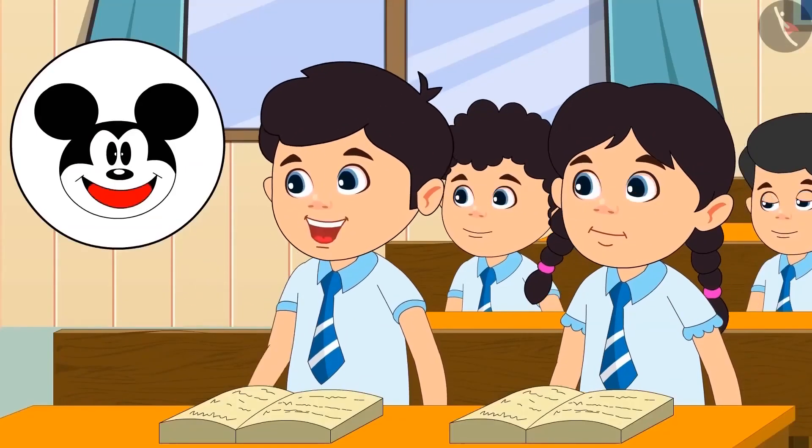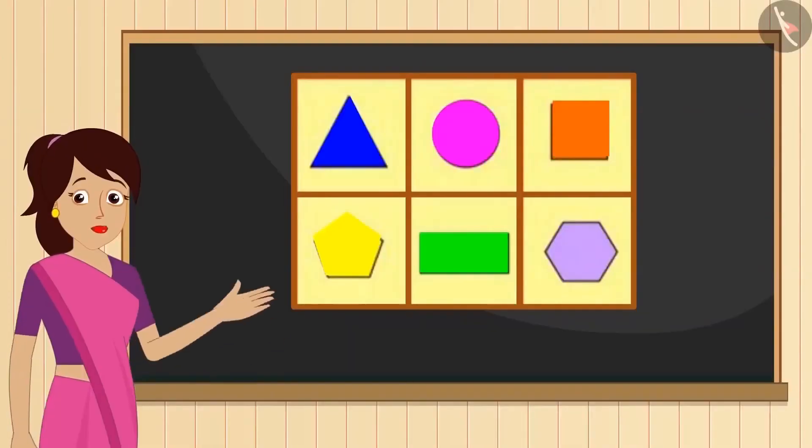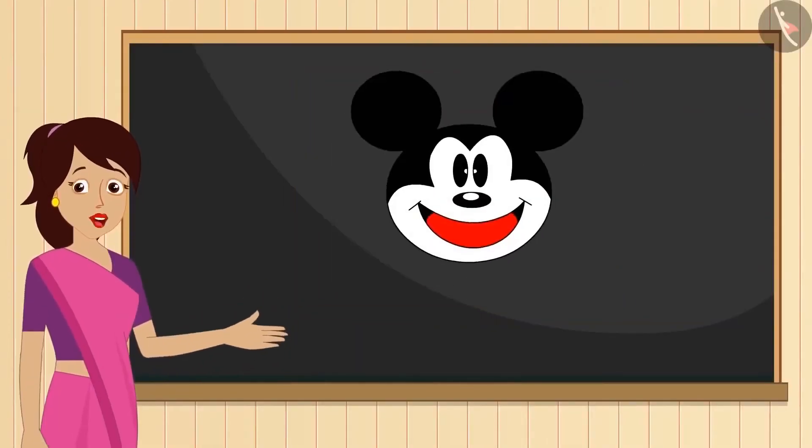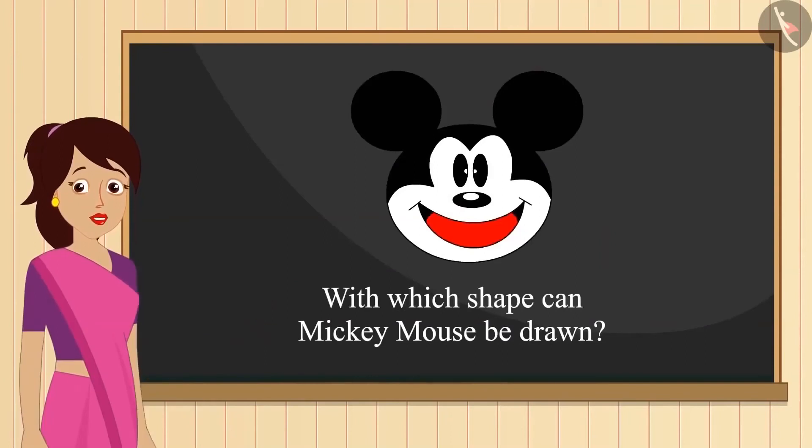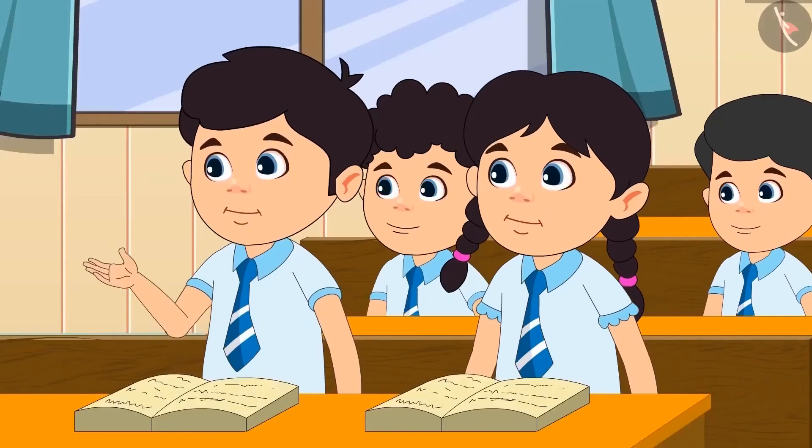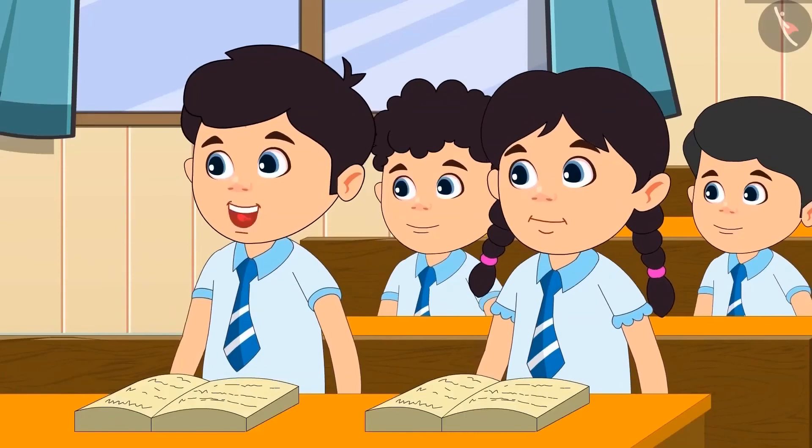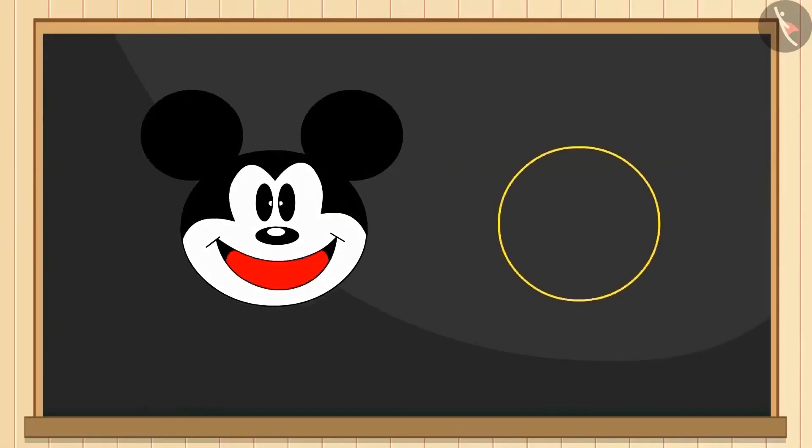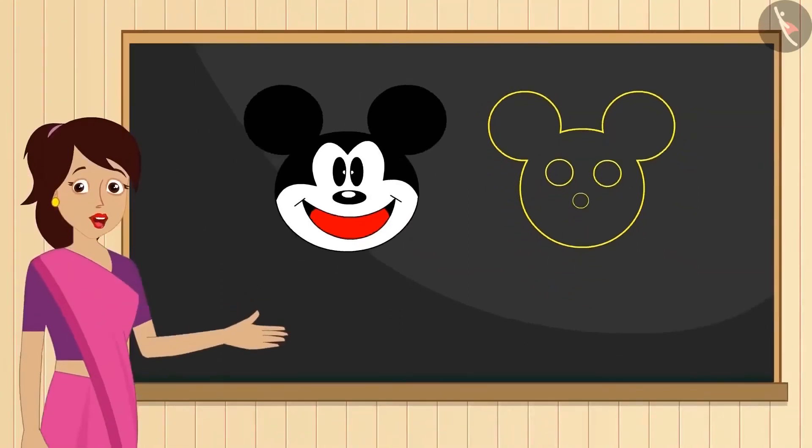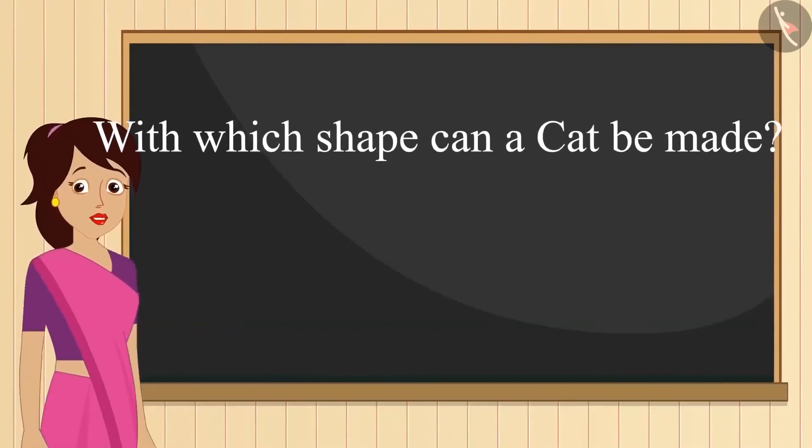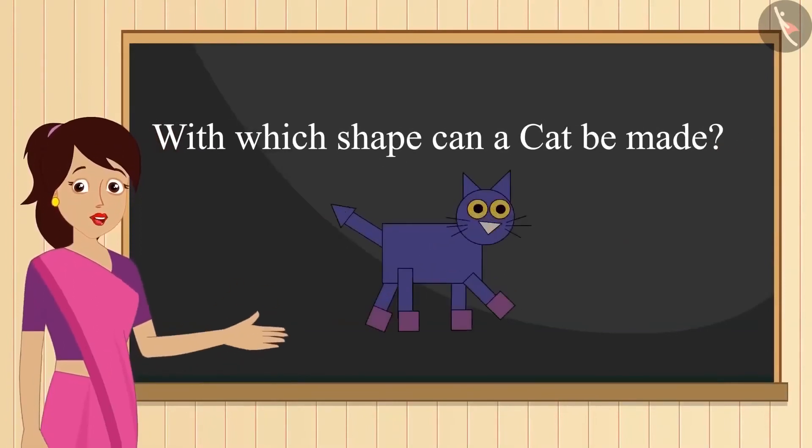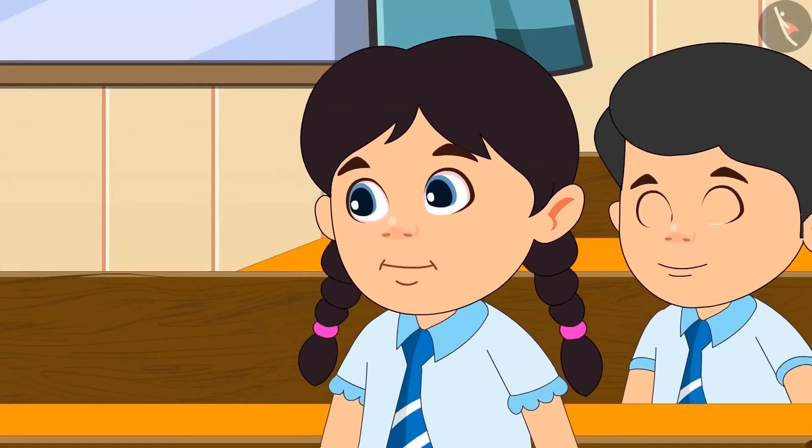So come on, let's go to the class. Children, tell me which is your favorite cartoon character? My favorite cartoon character is Mickey Mouse. So come on, now tell me with which shape you can draw the character Mickey Mouse? It can be drawn by joining six circles. Its big face can be made with one circle, two circles for its ears, two circles for its eyes, and one circle for its nose. Absolutely correct!